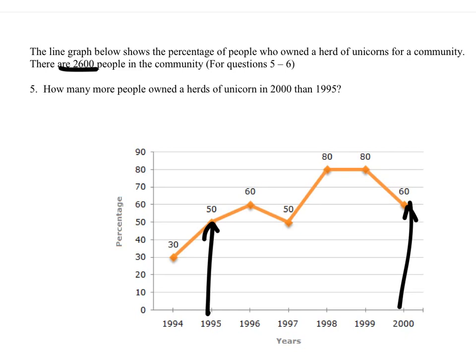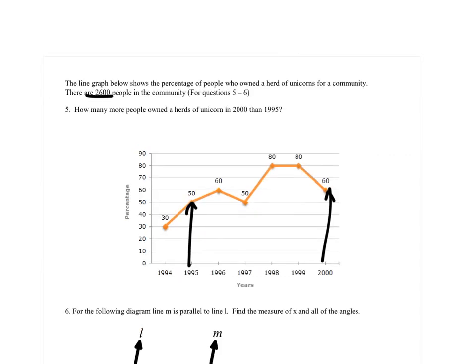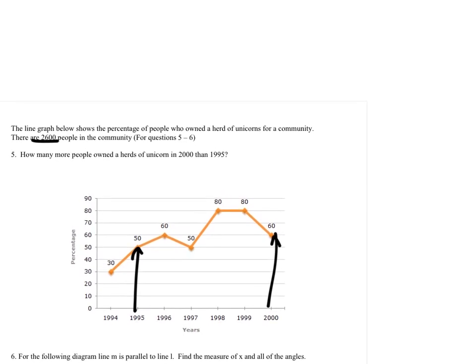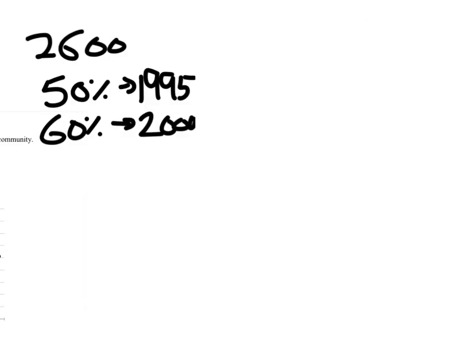So it looks to me like there's a couple ways we can do this. We can figure out the difference in percentages and find that percent of the people, or we can find how many people there were for both years and then just subtract those. Both should work. I guess we can track both. So we've got 2,600 people. Here's the information we need.